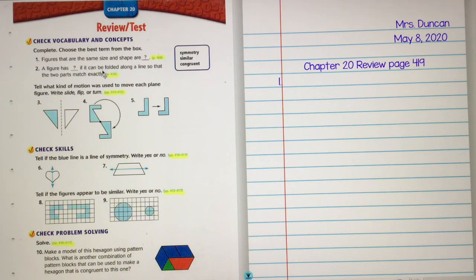All right, third grade, this is chapter 20 review test on page 419. I have a sheet of paper with my name, the date, and what lesson I'm working on. We're going to do numbers one through ten together, and I'm also going to show you where to look back in the chapter to find the answer because you have an open book chapter 20 test coming up.